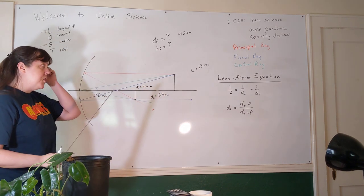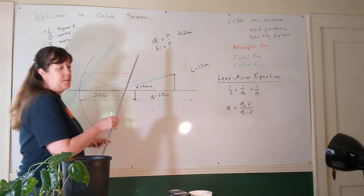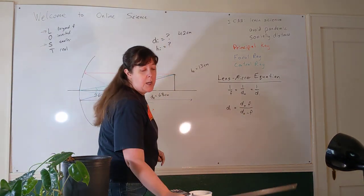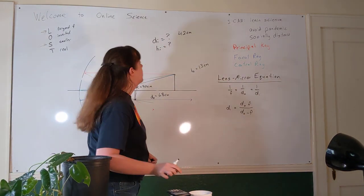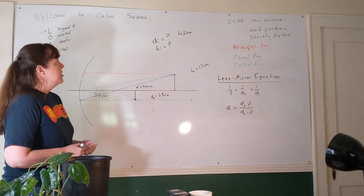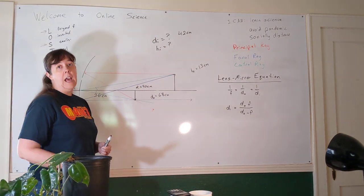And that's always going to be the case, especially if you're trying to draw ray diagrams on something as big as a whiteboard. Drawing a perfectly parallel line is pretty near impossible. So getting an image distance that is that close makes me perfectly happy.